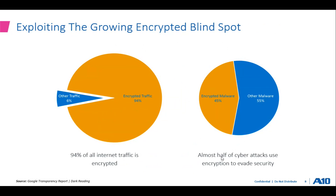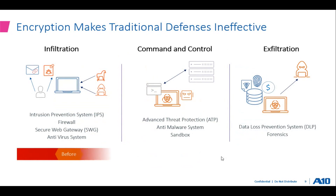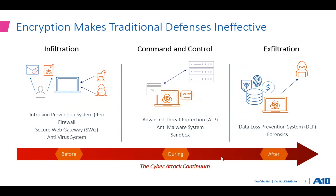Encryption also adds a blind spot because encrypted traffic is encrypted — you have no visibility into it. According to Google, 94 percent of traffic is now encrypted; in 2015 it was around 55 percent, and by 2020 it has reached 94 percent. More than 40 percent of cyber attacks abuse SSL encryption, and around 45 percent of malware was either encrypted or sent through encrypted channels so security devices cannot detect it.